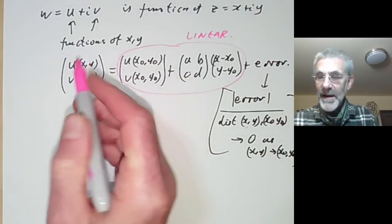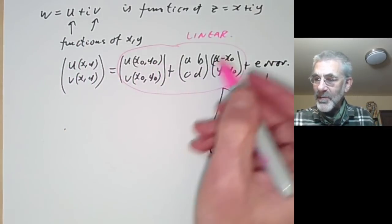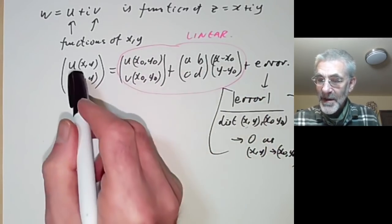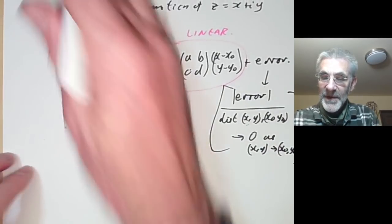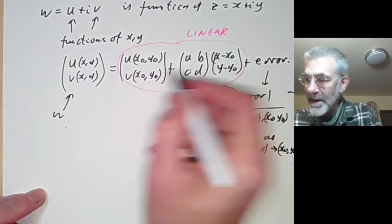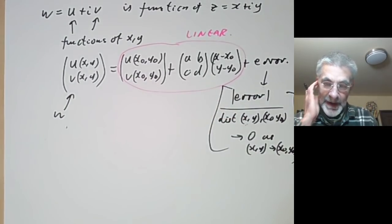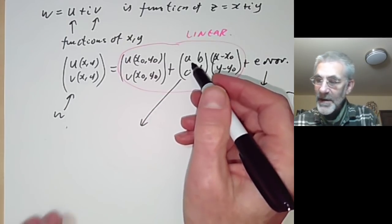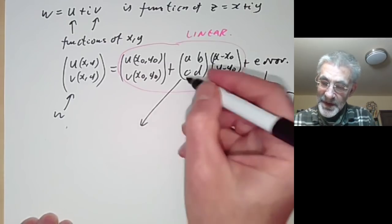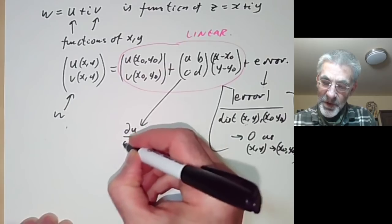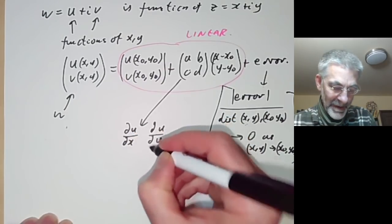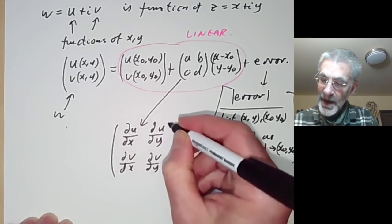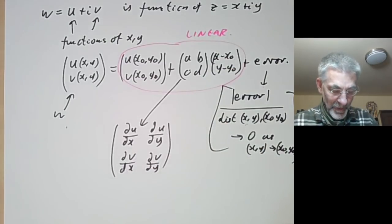So saying that w is differentiable at the point z zero just means that we can approximate this function w by this linear function plus a small error term. This matrix can be written in terms of partial derivatives: it's just the matrix with entries du/dx, du/dy, dv/dx, and dv/dy. So a, b, c, and d just turn out to be these four partial derivatives.